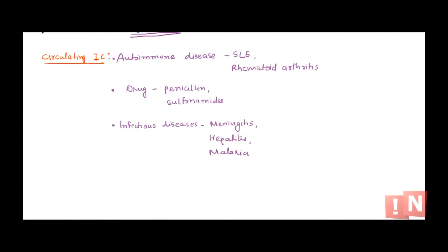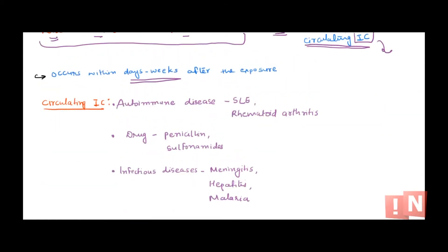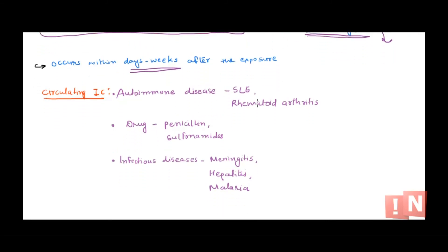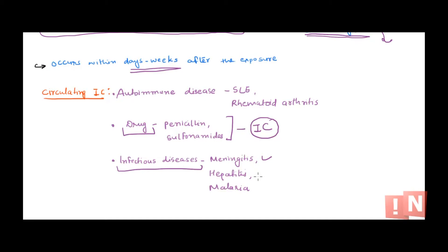Serum sickness is not the only cause of systemic type 3 hypersensitivity. Drugs such as penicillin and sulfonamides can form circulating immune complexes. Infections causing diseases like meningitis, hepatitis, and malaria also produce circulating immune complexes. Additionally, autoimmune diseases are an important cause.